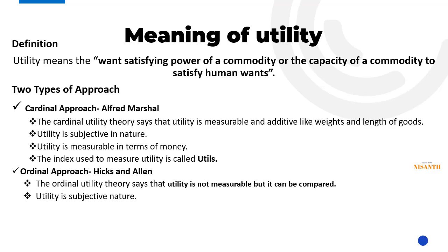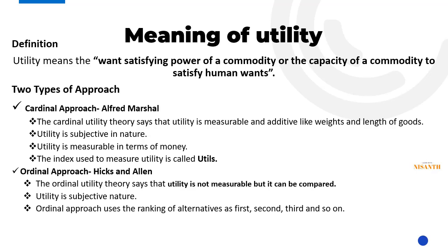Utility is subjective in nature — a product consumed in the same way will give different utility to different people. This is because each person has a different preference and different expectations about a particular product. In the ordinal approach, utility is expressed using the ranking of alternatives: first, second, third, and so on. We rank the satisfaction we receive and assign first rank, second rank, third rank accordingly.